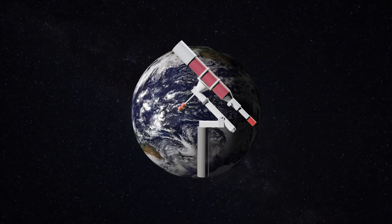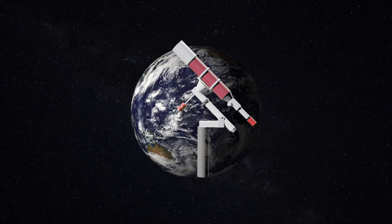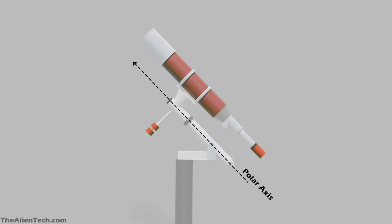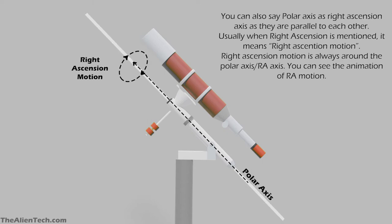The equatorial mount works on the principle of canceling out the earth's rotation. The equatorial mount has three axes: the first is the polar axis, the second is the right ascension axis.